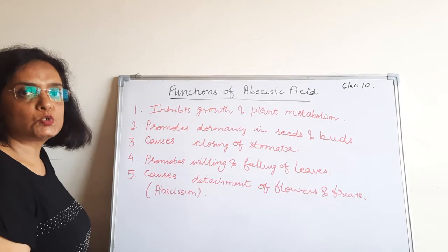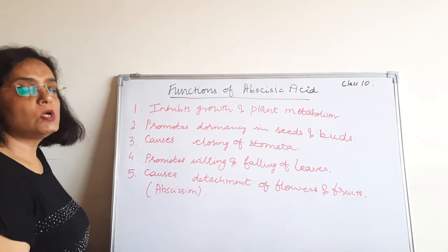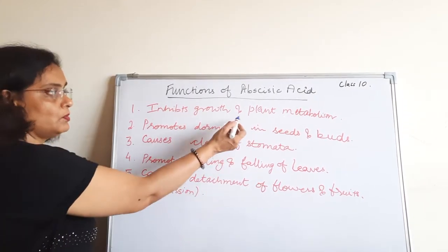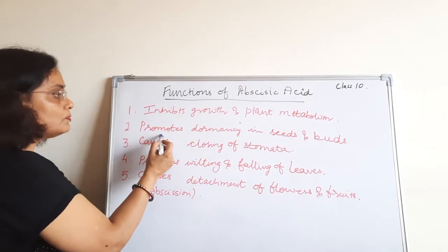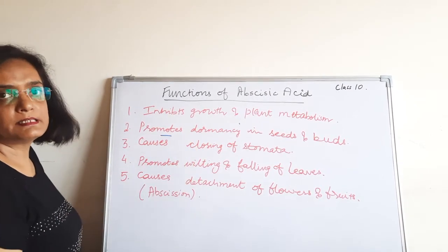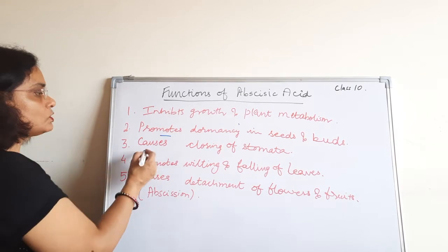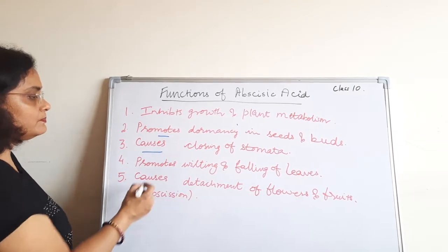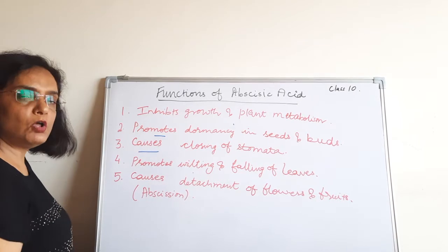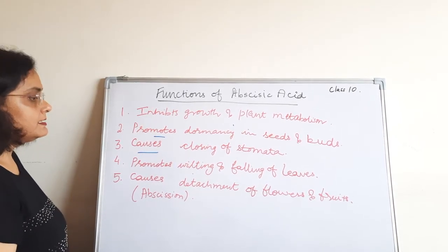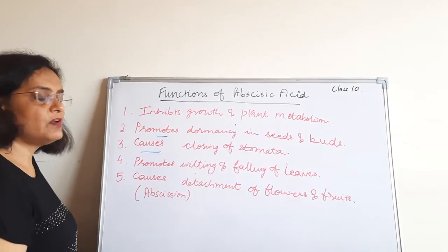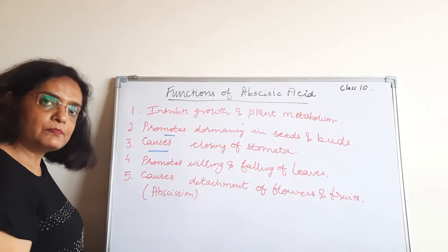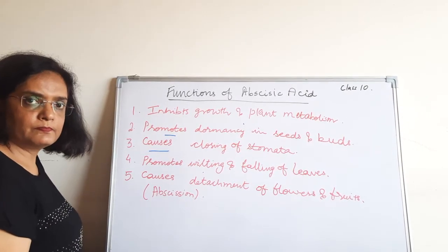Abscisic acid is a plant growth inhibitor. It inhibits growth and plant metabolism. It promotes dormancy in seeds and buds, causes closing of stomata, promotes wilting and falling of leaves, and causes detachment of flowers and fruits. Detachment of flowers and fruits is abscission.